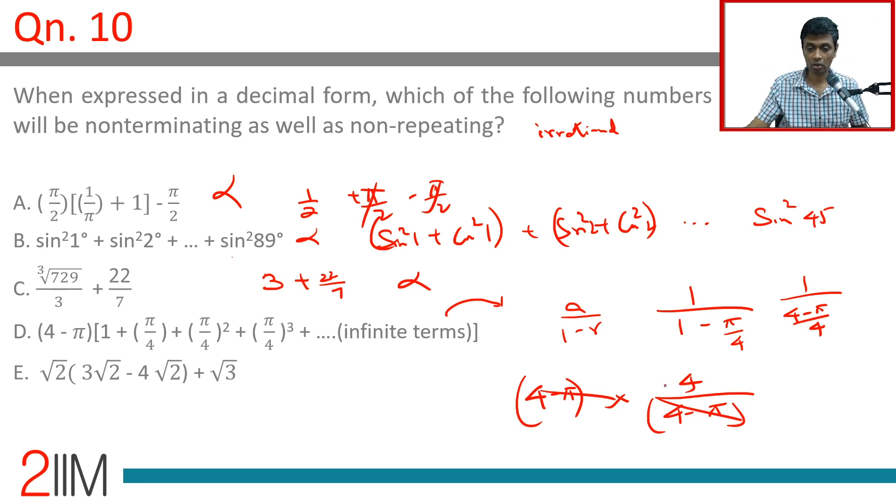So this will get knocked off and result in 4, a nice integer. Hmm, this should be the answer? Let me simplify that.